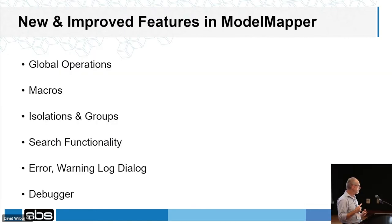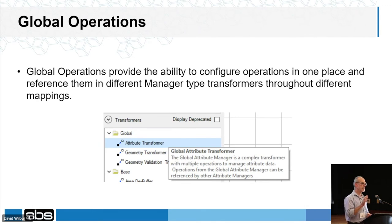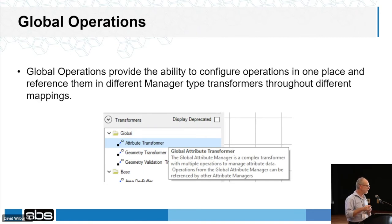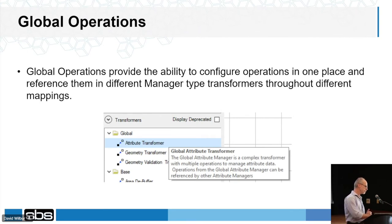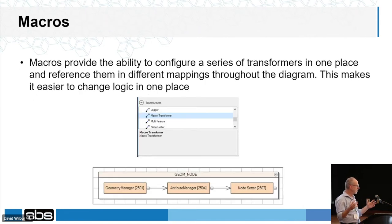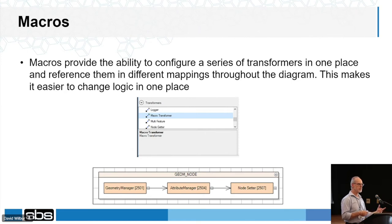Some things added in the past three years: global operations, macros, isolations and groups, search functionality, error logging, and debugging. Global operations is a real time saver — if every feature class requires certain attributes to be configured, you do it once in a global and reference that global mapping in each feature class mapping. If there's a change in name or syntax, you change it in one location and it affects all mappings. Macros work the same way — group multiple transformers together and reference the macro, so any changes only need to be made once.